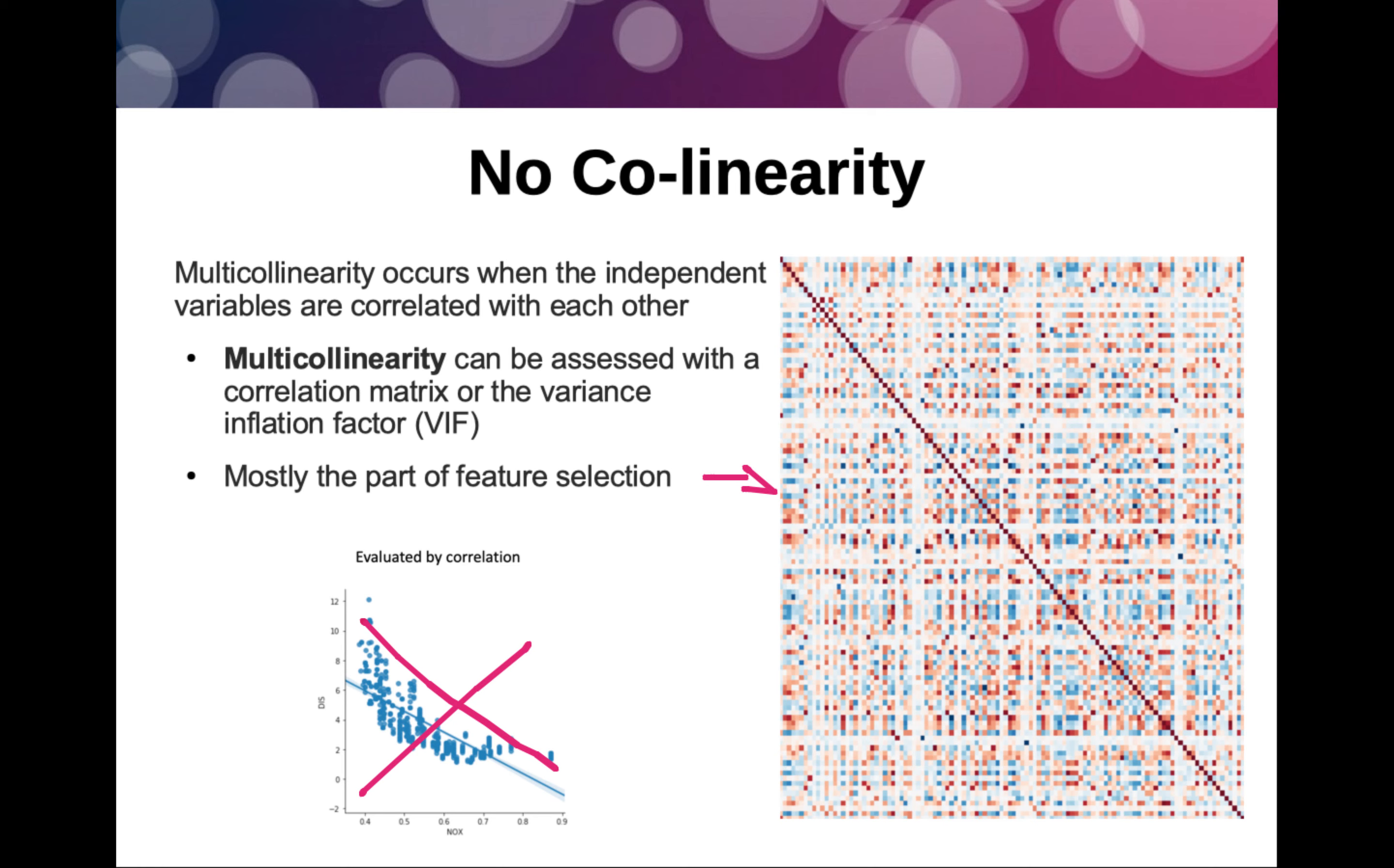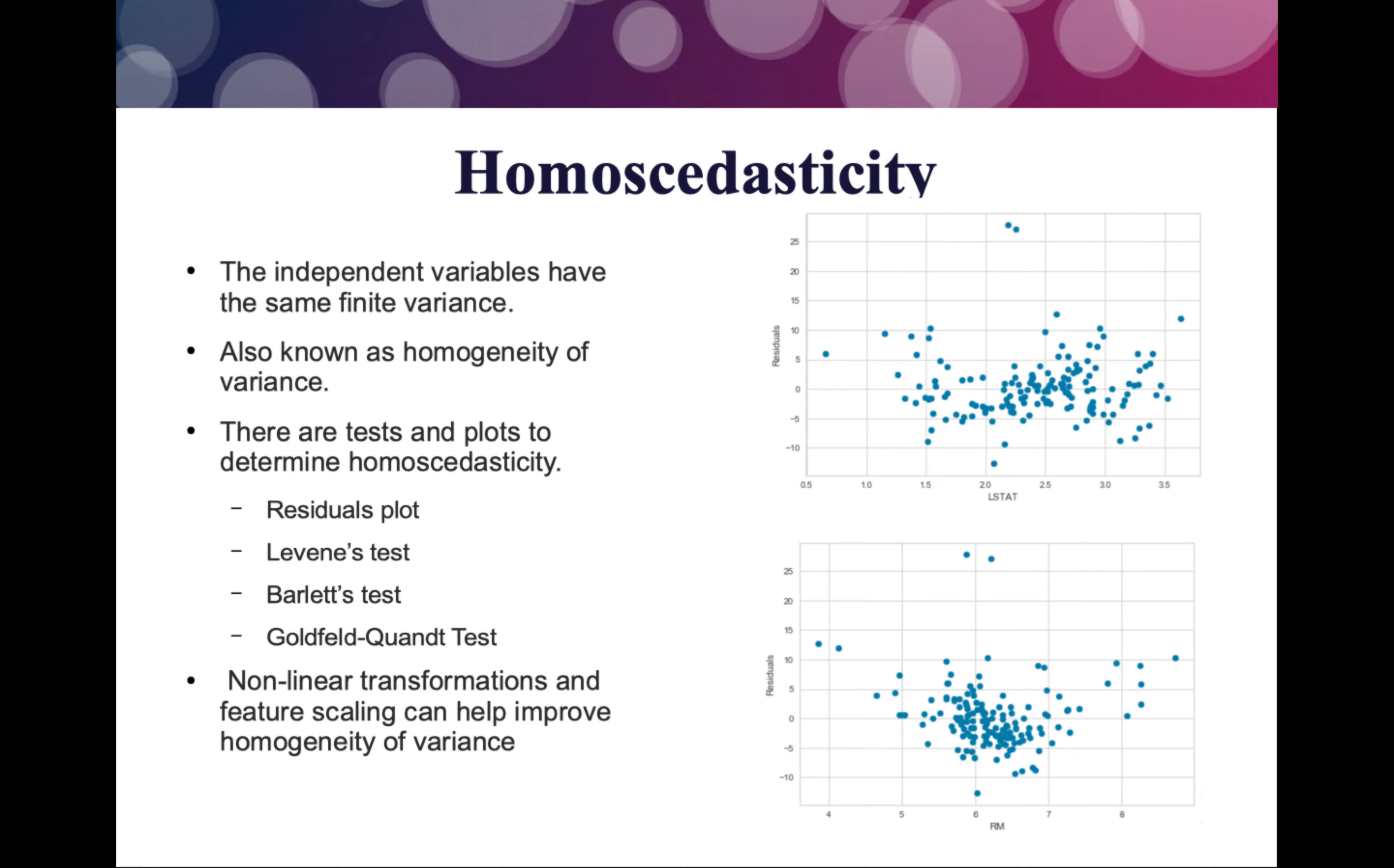Now we should get into homoscedasticity. This is hard to pronounce, please bear with me. It means that the independent variables have the same infinite variance. This is determined by a residual plot. A residual plot can show you that it has the same infinite variance at all levels.